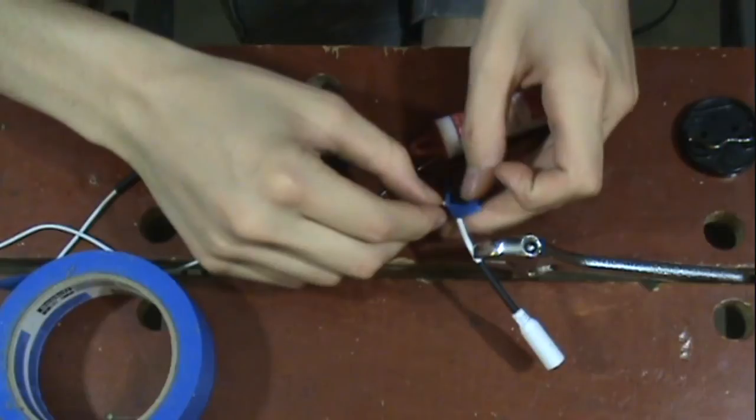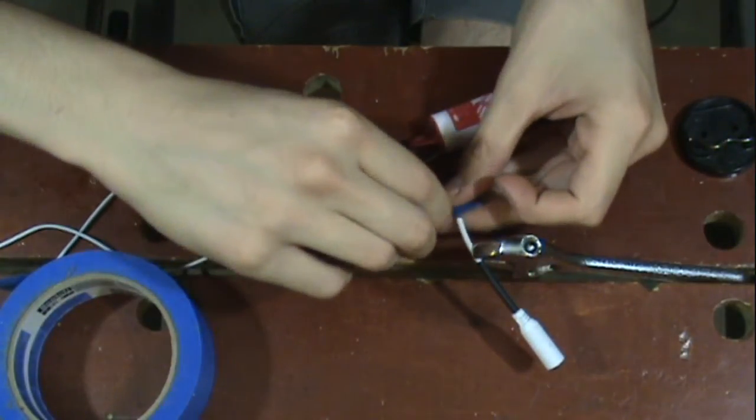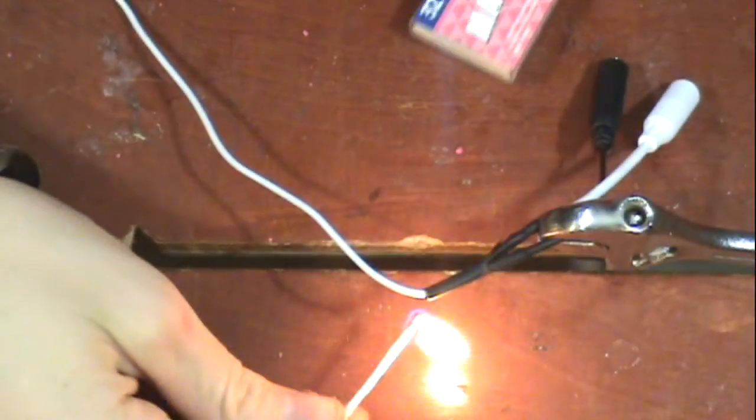Finally, put a bit of tape over each connection so that it doesn't short out with the other connections. Then you can go ahead and shrink your heat shrink tubing.